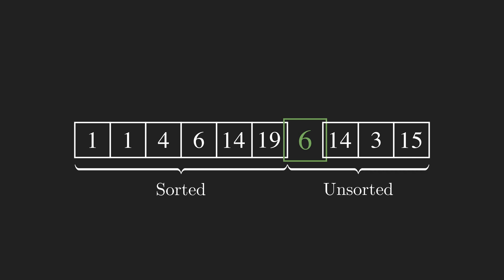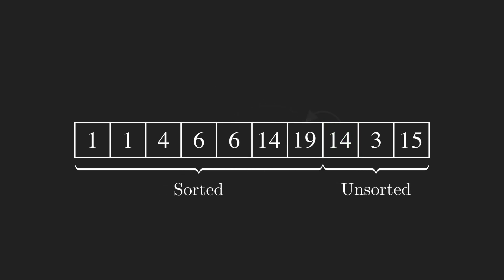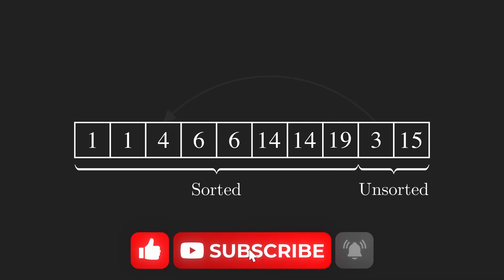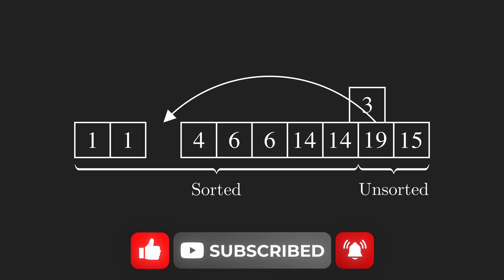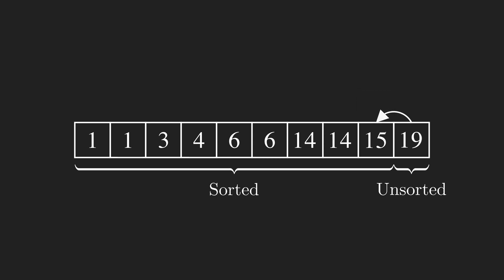Here the first value of the unsorted section is 6, and its correct position is occupied by 14. So we need to shift 14 and 19 to the right and make space for 6. We do it over and over, and each time it increases the length of the sorted section and reduces the length of the unsorted part. At the end we place the last item of the array in the correct position and our array becomes fully sorted.